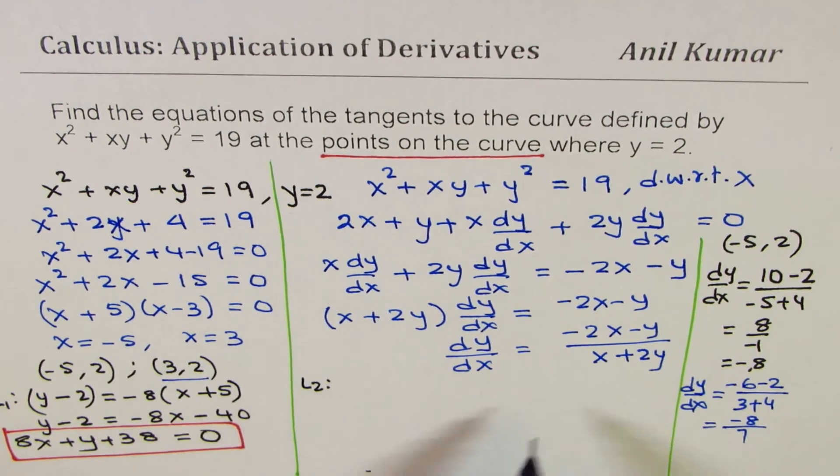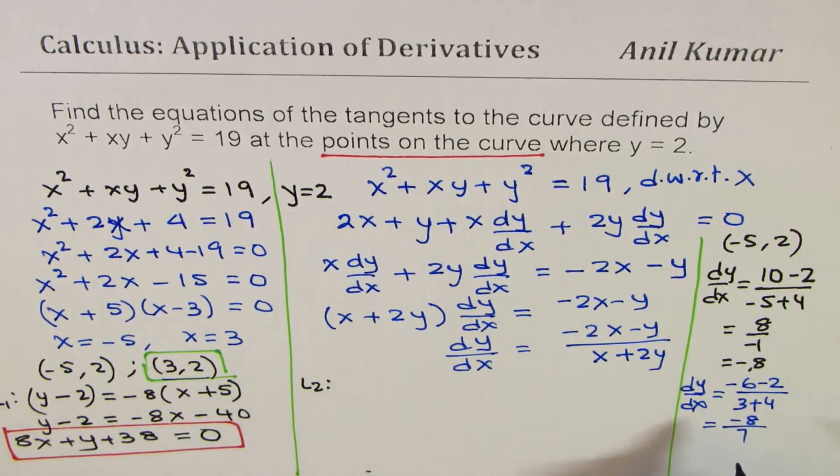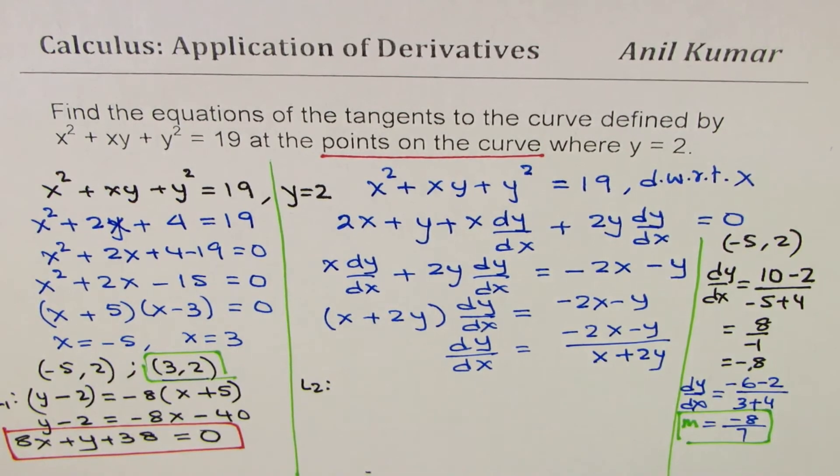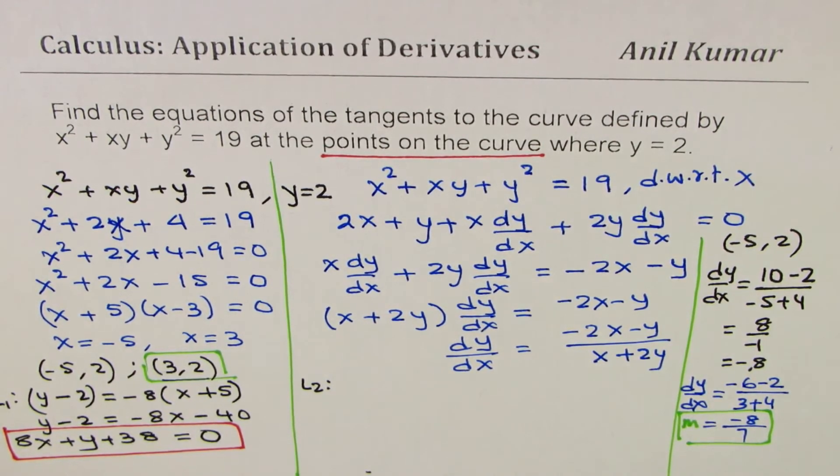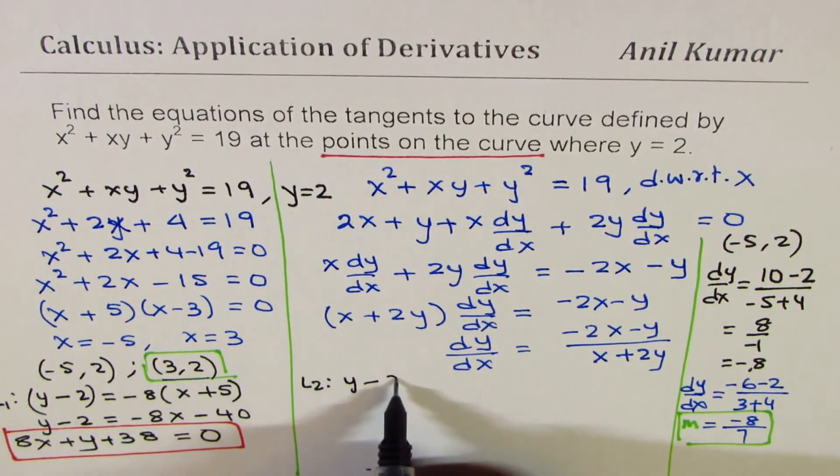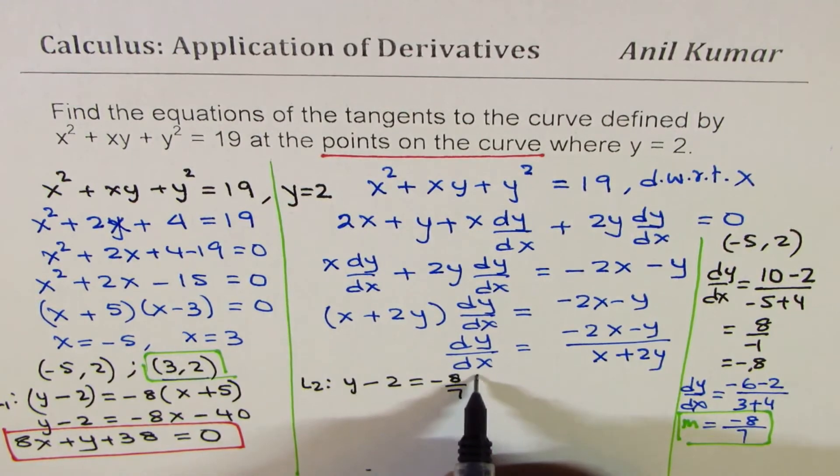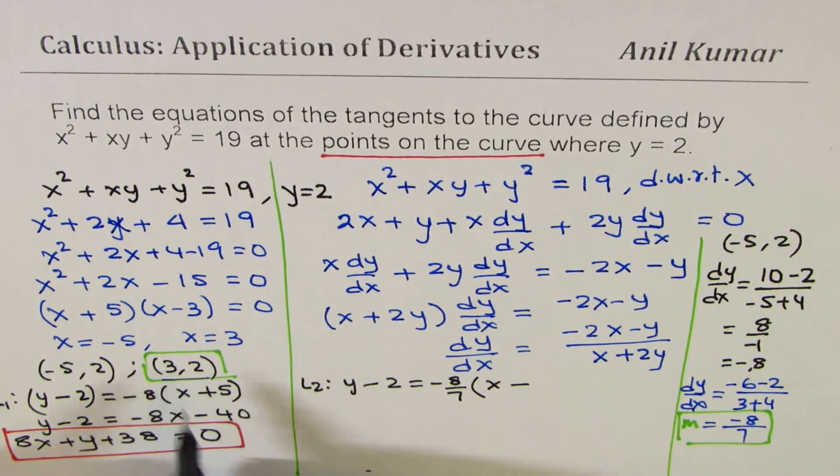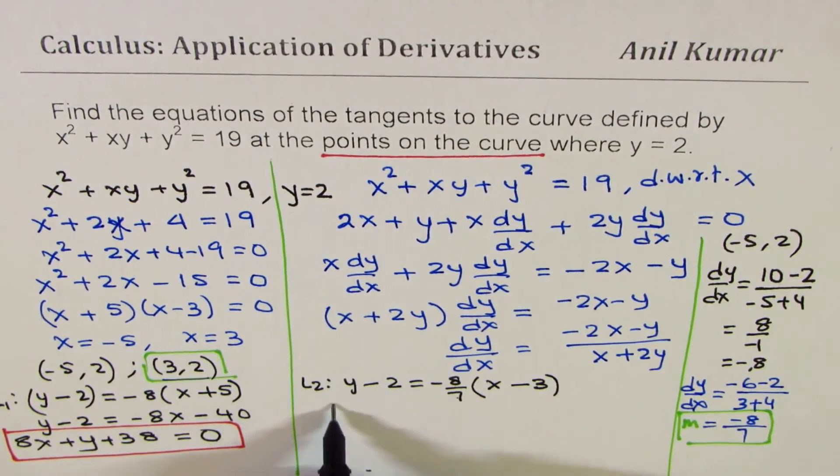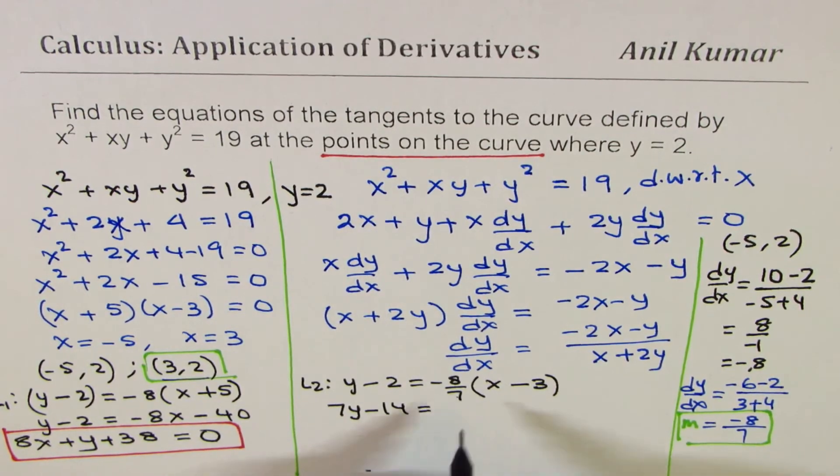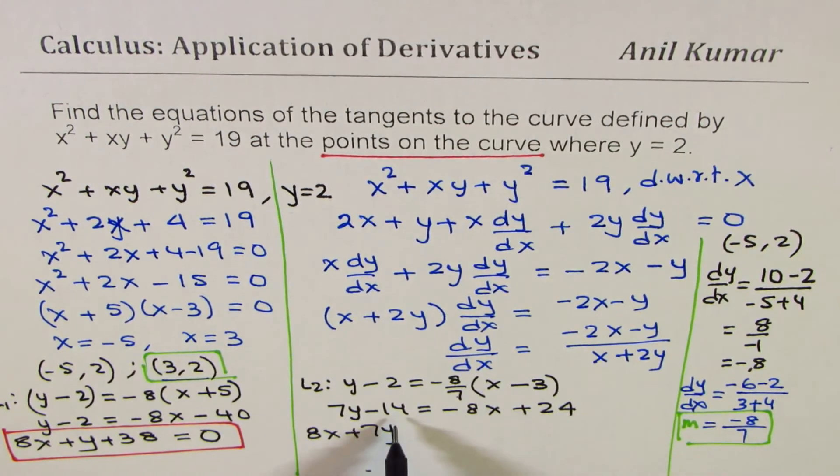So, for line 2, we'll again write y minus, now we are working with this set of points. So, we are working with (3, 2). We have a slope, m, as -8/7. So, the equation is, y - 2 = -8/7(x - 3). So, let us multiply by 7. So, we get 7y - 7 × 2 as 14 = -8x + 8 × 3, 24. Bringing 8x here, we get +7y. Bringing 24 as -24, we get -38 = 0. So, that becomes the second equation.